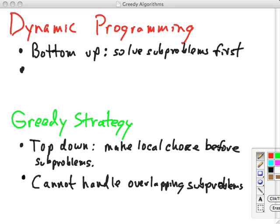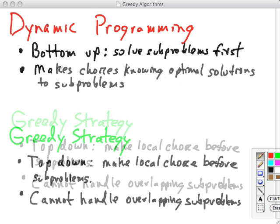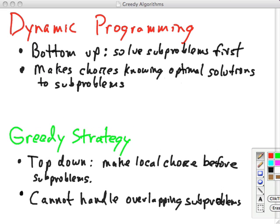And furthermore, it makes choices knowing the optimal solutions to sub-problems. Solving sub-problems first lets you do two things: it makes it more efficient because you don't have to re-solve them, and it addresses interactions.